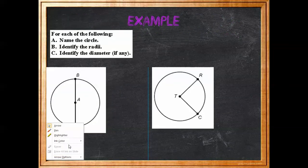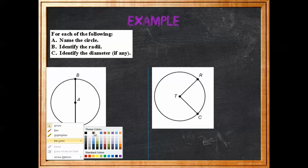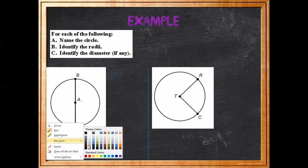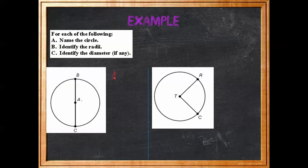For each of the following, we want to name the circle, identify the radii, and identify the diameter if there are any. When you name a circle, you name it by its center point. So here we have A at the center, so we would call this Circle A.